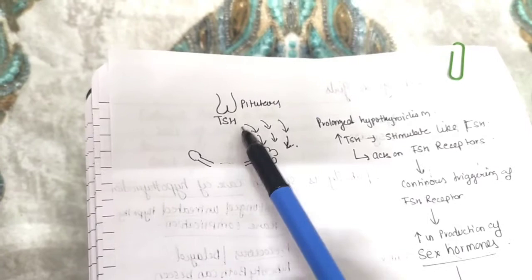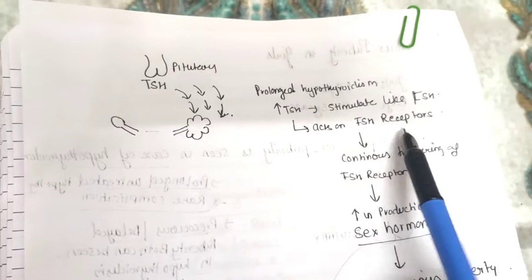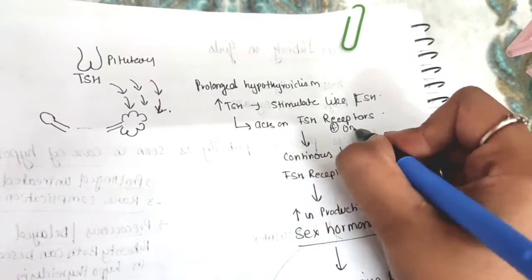When there will be increased TSH in case of hypothyroidism, there will be elevated TSH. This TSH, because it has a property similar to FSH, will act on the FSH receptor present on the ovaries.